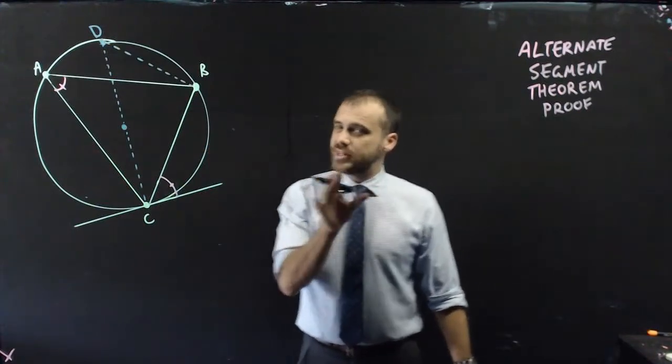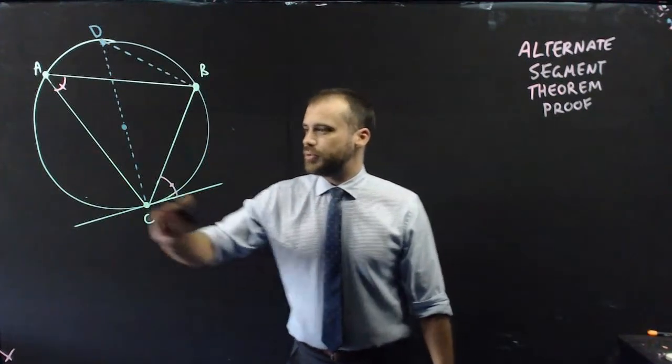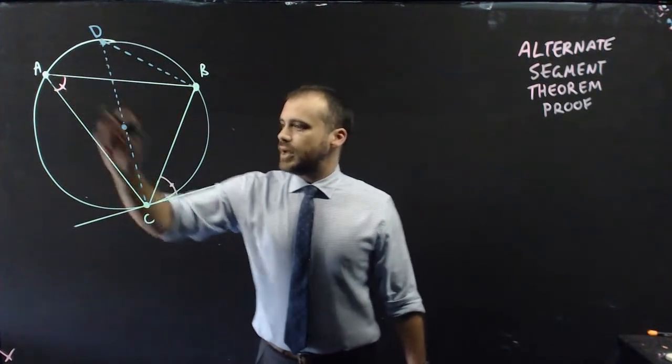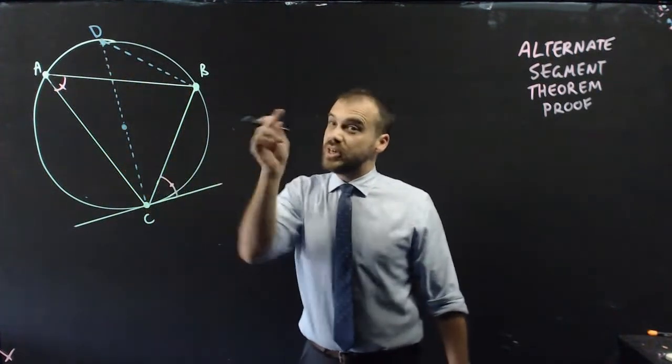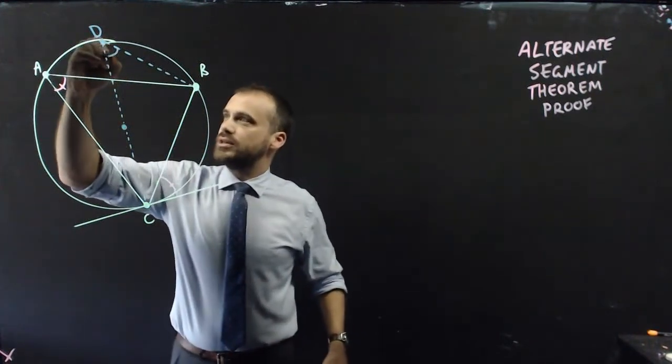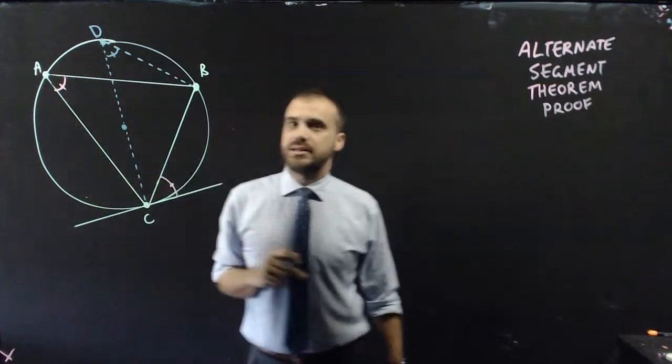And now that we have that, you should start seeing something starting to form, right? We have this one here, which is this angle, and then we have this one here, which is subtended off the same arc, which means that this angle must be the same as that angle.